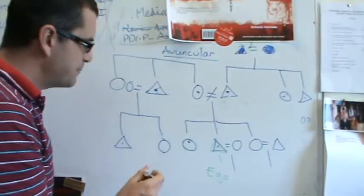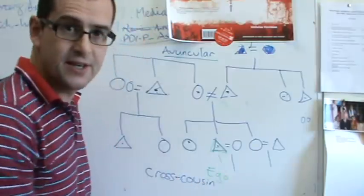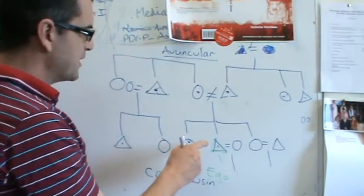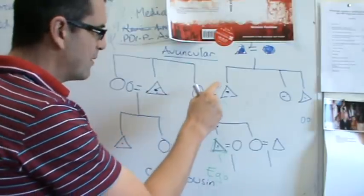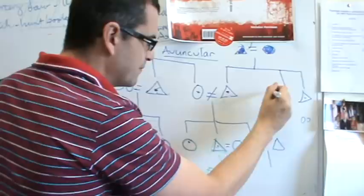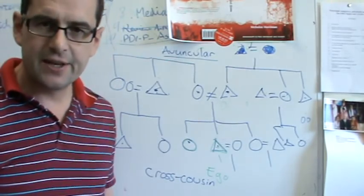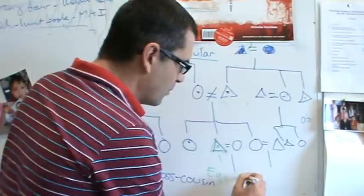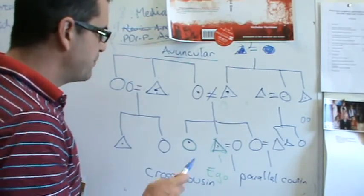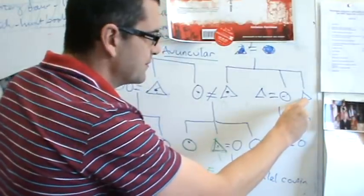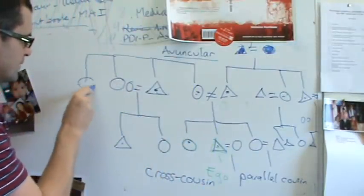This person is called your cross-cousin. My cross-cousins are either my mother's brother's children, or my father's sister's children. If that's cross-cousin, what do you think parallel-cousin would be? A parallel-cousin would be my father's brother's children, or my mother's sisters.